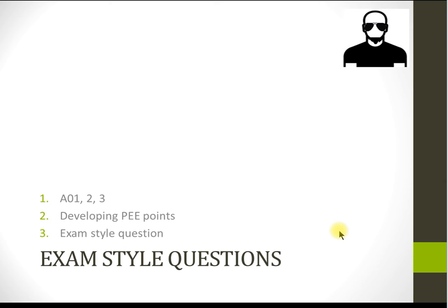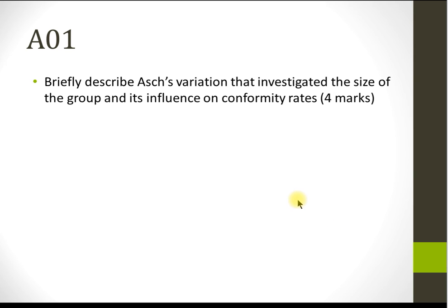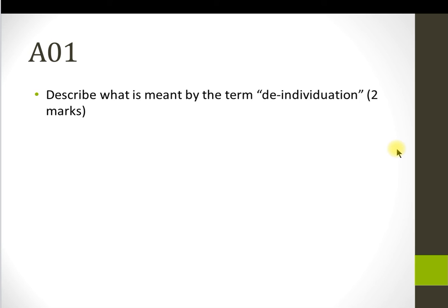That's all the content you need to know about Zimbardo along with your guide notes. Now I'm going to give you exam questions to go through in class — you need to have written answers to all of these. Question one is an AO1 question with two marks available: briefly describe what is meant by the term 'de-individuation.' Around 40 to 50 words would be appropriate. Bring the answer next time.